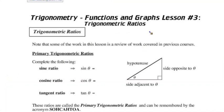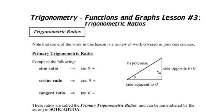We are talking about trigonometry functions and graphs, lesson number three: trig ratios. The primary trig ratios are sine ratio, cosine ratio, and tangent ratio. These should have been studied in previous courses, but let's just review what those ratios are.